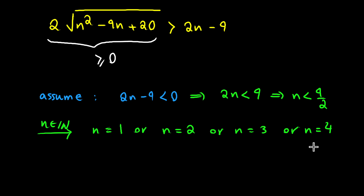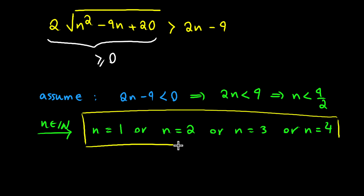In other words, n equals 1, n equals 2, n equals 3, and n equals 4 are solutions to this inequality because they satisfy our inequality. So we have four solutions in the first scenario.